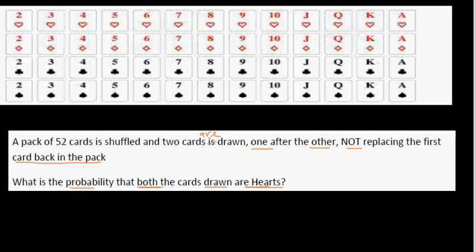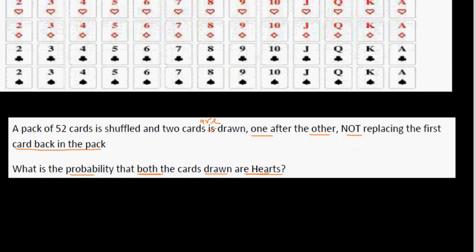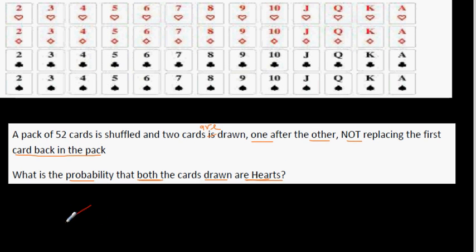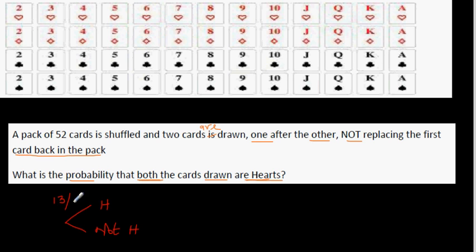To answer this type of question it is a good idea to draw a probability tree. For the first card, you can draw a heart or not a heart. The probability that the first card is a heart is 13 out of 52. The probability of not a heart is 39 out of 52.